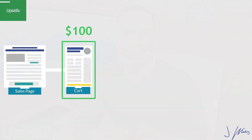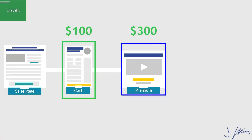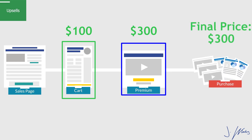Another feature I really like about Thrivecart is the ability to essentially upgrade or overwrite the previous transaction. For example, let's say you're offering a course for $100 — they enter their credit card and pay. Then the first upsell says, 'If you want the deluxe premium version, it's $300.' If someone clicks yes, Thrivecart can overwrite the first transaction so they just pay $300 instead of $100 plus $300. It's a great way to offer upgrades via upsells — something I haven't seen in other shopping cart softwares.